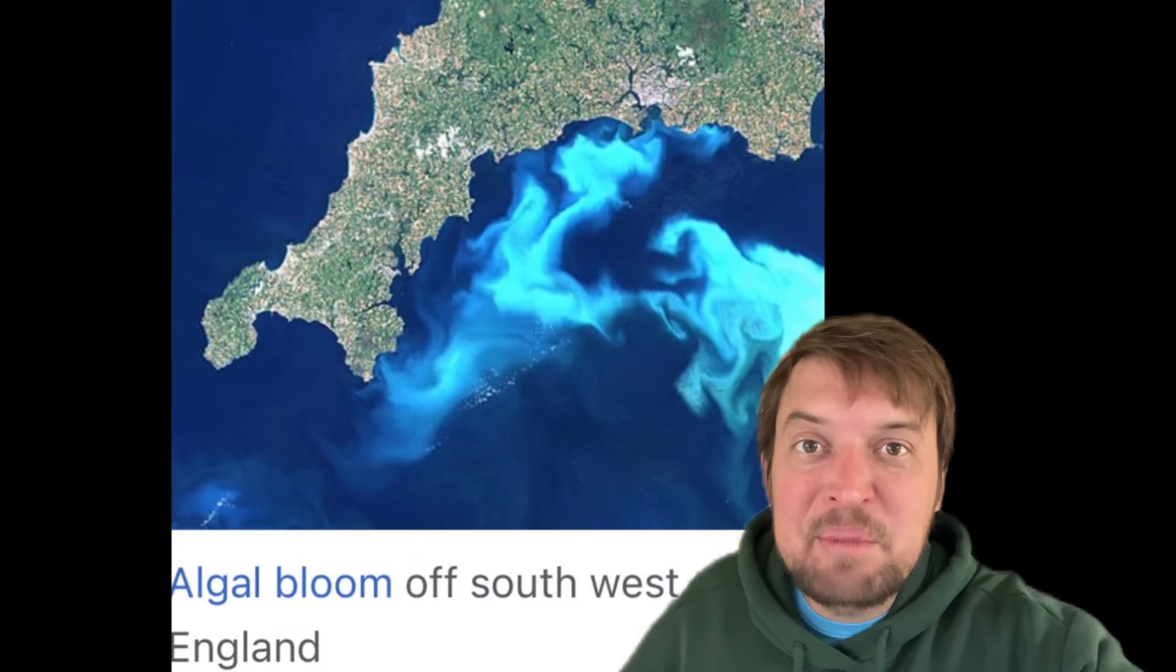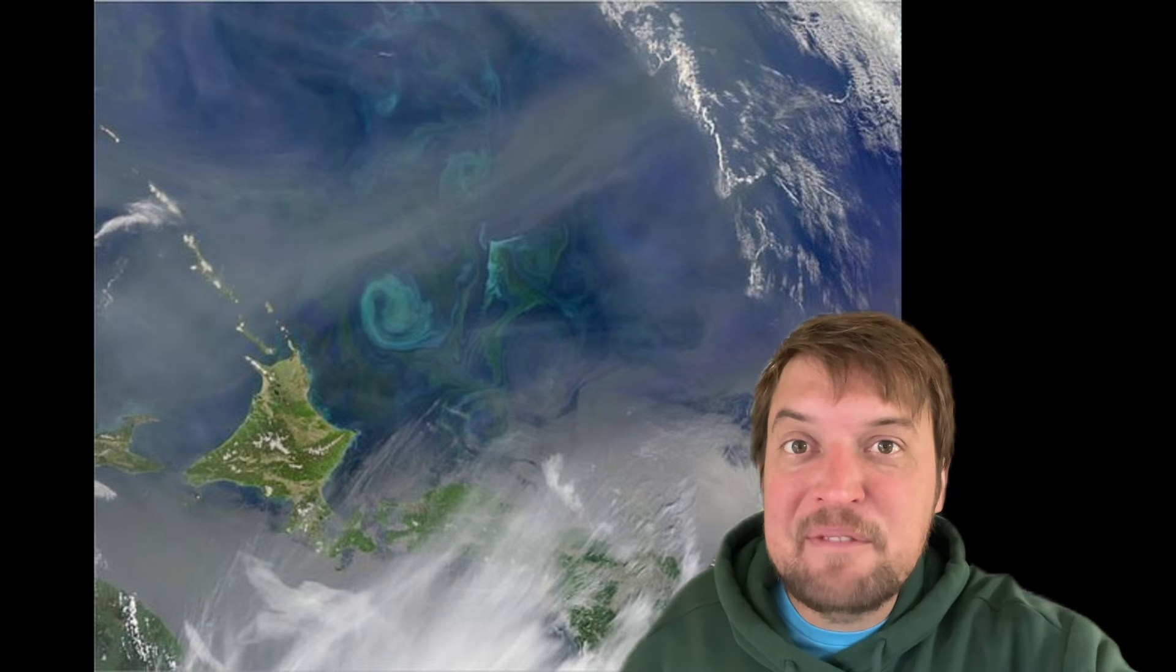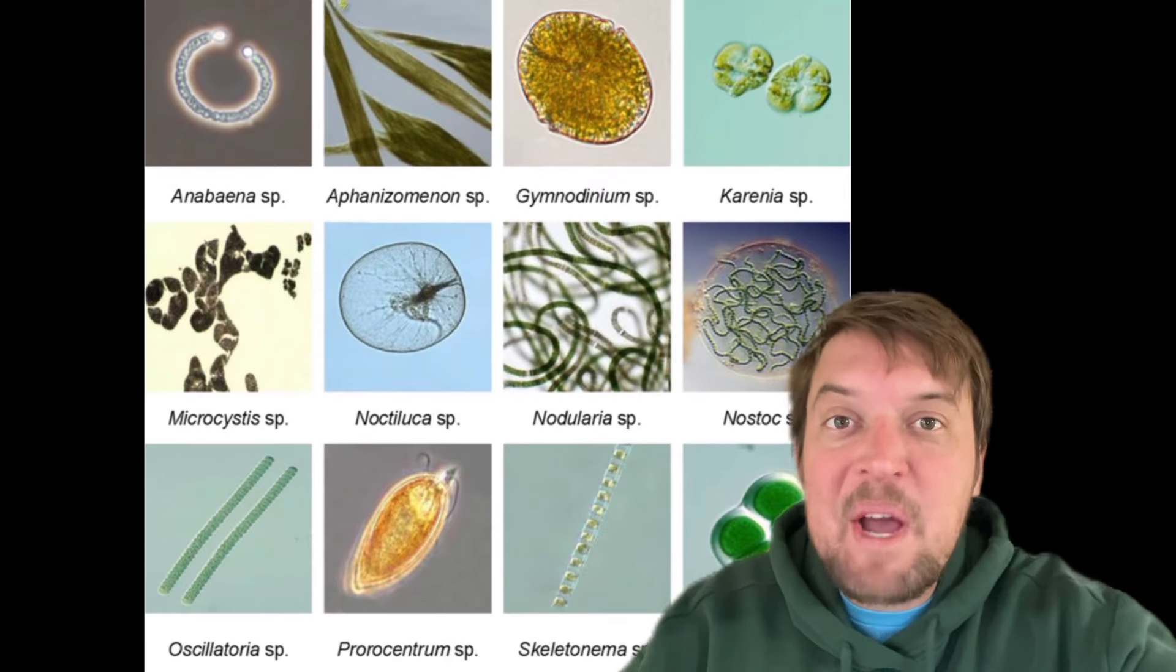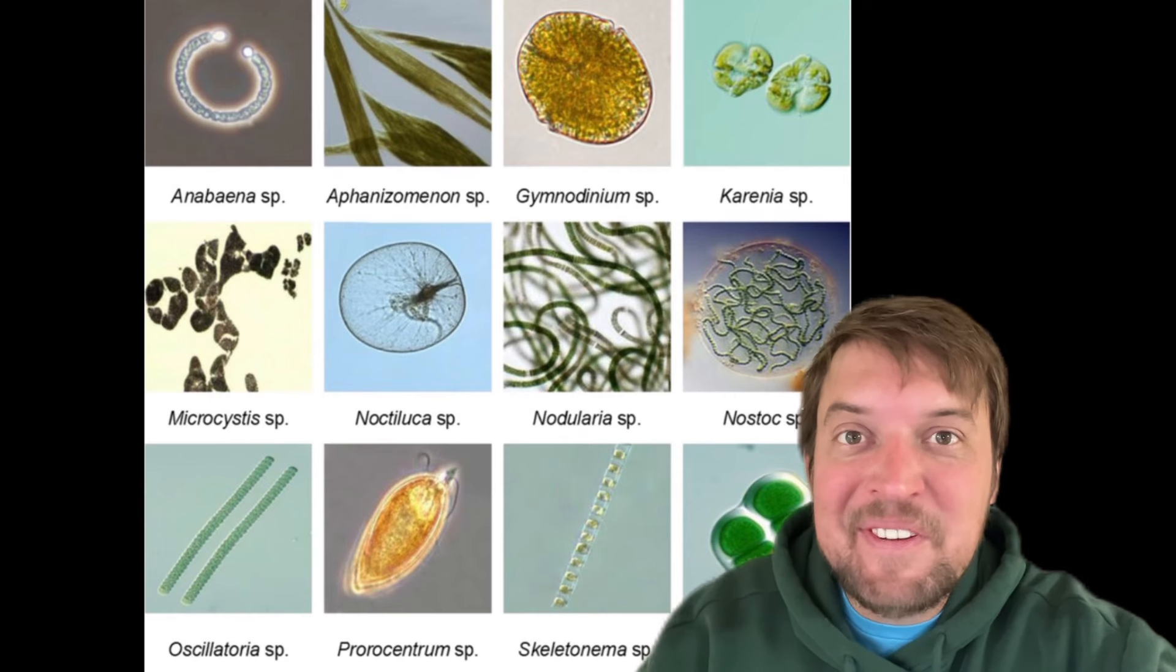Sometimes you can even see plankton blooms from space. But having so many of the same species congregating in the same place makes a perfect environment for viruses to come on in and take them down a peg. And when they get wiped out, other species find a new space to hang and continue reproducing.